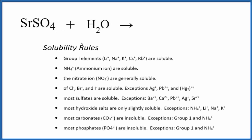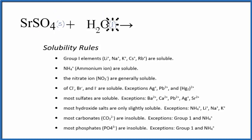In this video we'll look at the equation for strontium sulfate plus water — that's SrSO₄ plus H₂O. Strontium sulfate is a solid, so we put a little 's' for solid, and we're placing it in liquid water. We want to know what happens. Strontium is a metal, and the sulfate ion is made up of nonmetals.